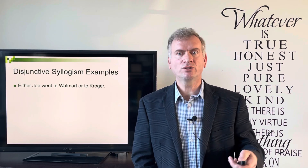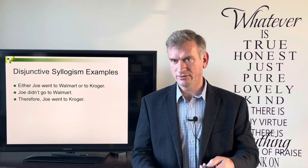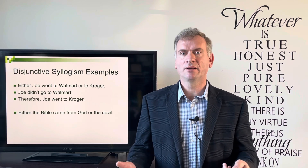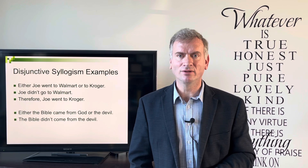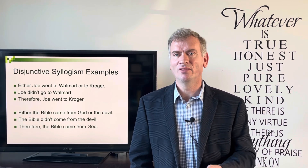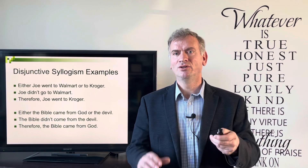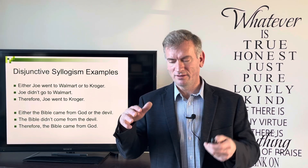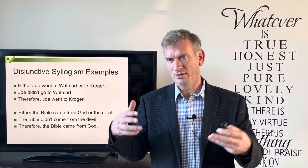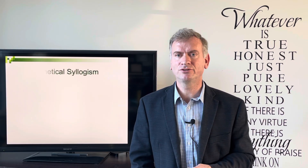For example: either Joe went to Walmart or he went to Kroger; he didn't go to Walmart, therefore Joe went to Kroger. That's a valid example. Another good example: either the Bible came from God or it came from the devil; the Bible didn't come from the devil, therefore the Bible came from God. Just remember the rule — you deny one of the options in the second premise and then affirm the other option in the conclusion. That's the disjunctive syllogism.